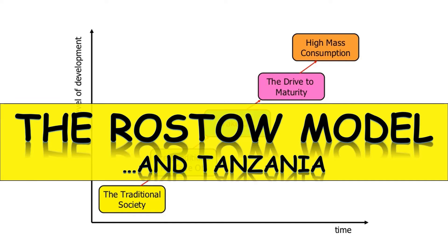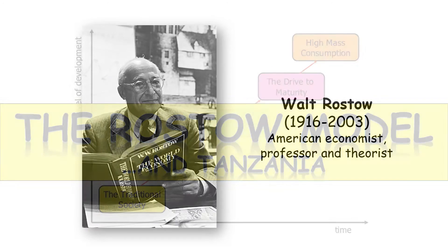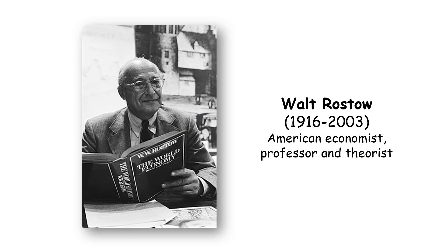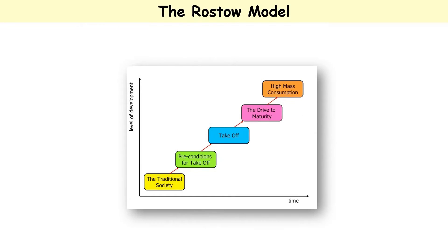The Rostow model and trying to apply it to Tanzania. Here's Walt Rostow - he was an American economist who lived from 1916 to 2003 and he came up with his model of development. His idea was that every society has to pass through five stages in order to develop. Let's have a look at each of the stages he proposed.